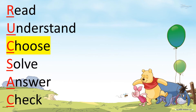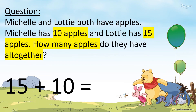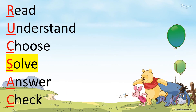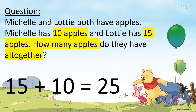After Understand, we Choose. We need to choose what operation we are going to do to find the answer to this question. We need to add 10 and 15. So, 15 and 10 gives us 25.